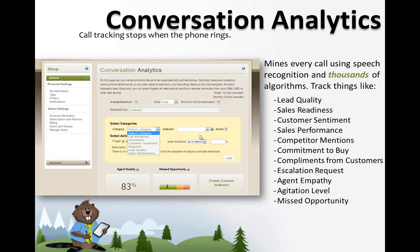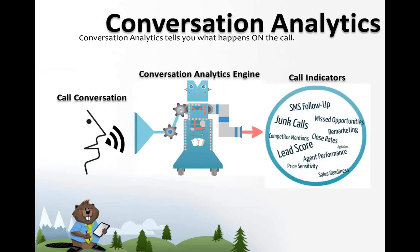You can see on your screen an actual screenshot from the tool, and it's set up in a really common sense way. You simply select the tracking numbers or call recording methods you want to use to get calls into the system. You select how many phone calls you want to analyze on a daily, weekly, or monthly basis. You put in the minimum call duration in seconds — you don't want to analyze 10-second calls, as that won't provide useful information. Then you describe exactly what your analysis will produce.